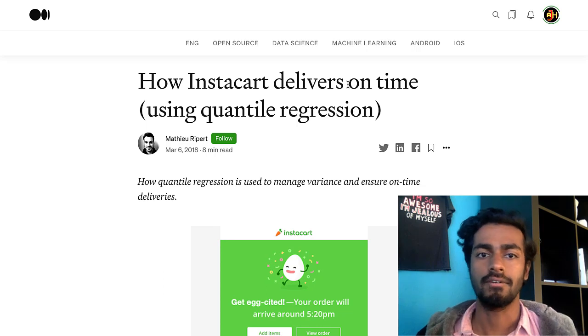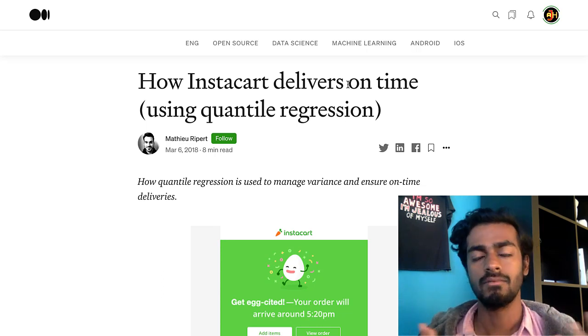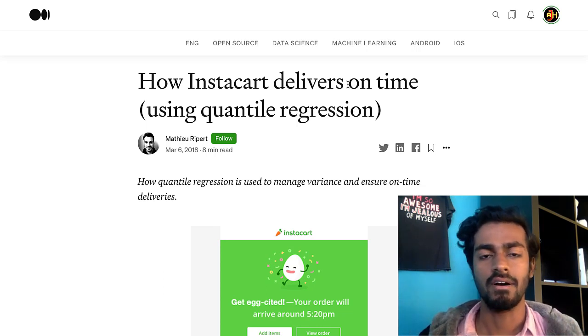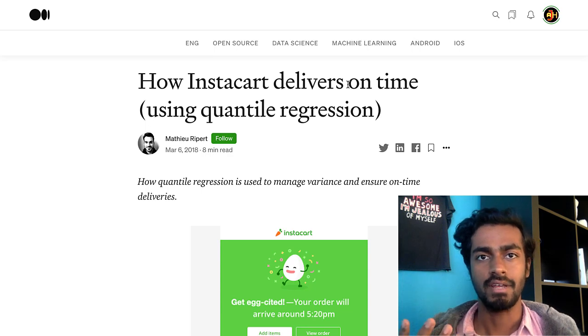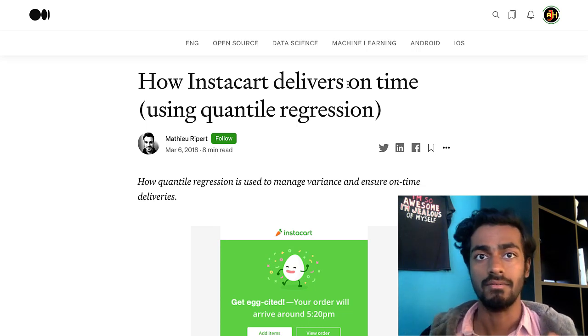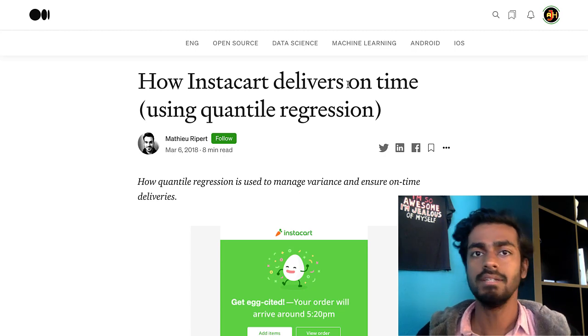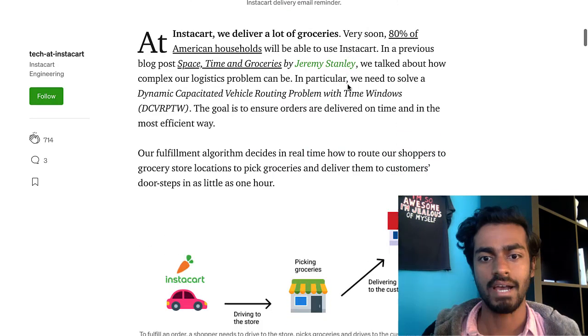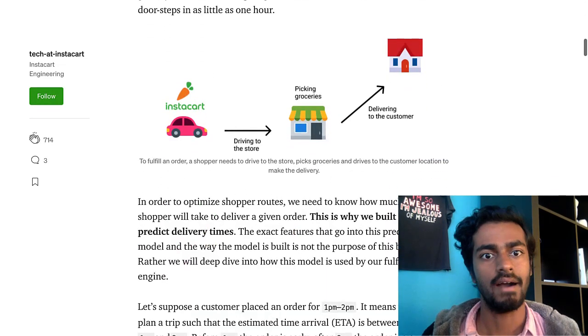So in general a very quintessential example for Instacart in machine learning is: you're given like a distance from a grocery store to a buyer's location, how long will it take for a driver to go from the grocery store to the buyer location with all the groceries. So given distance determine ETA, which is kind of what the problem here symbolizes.